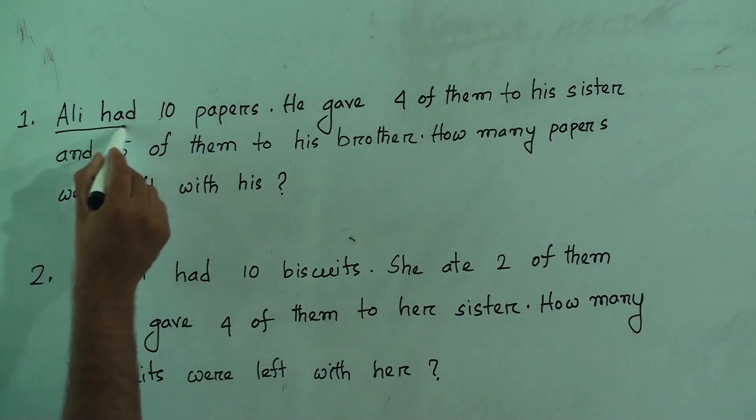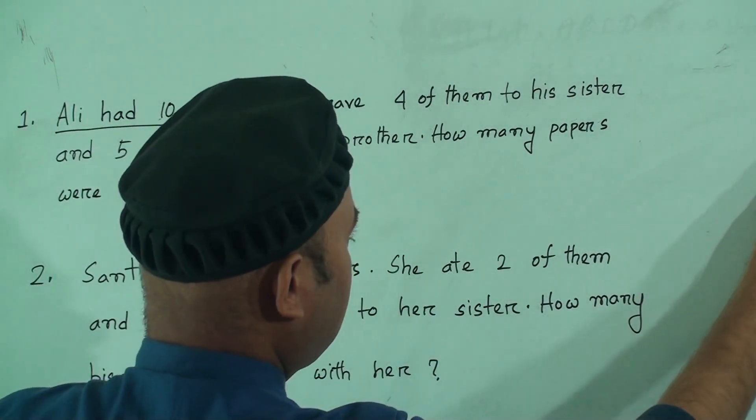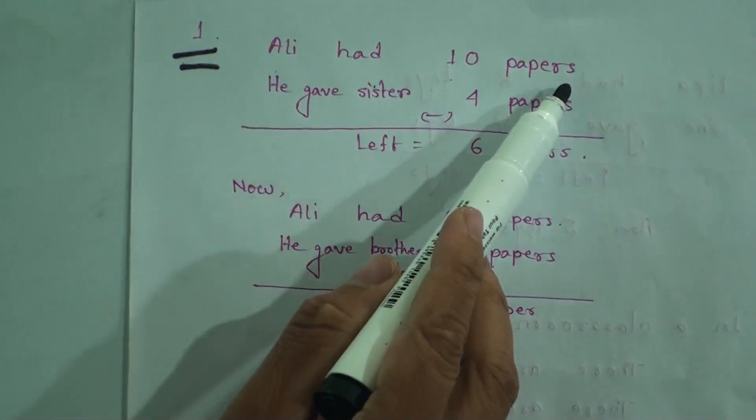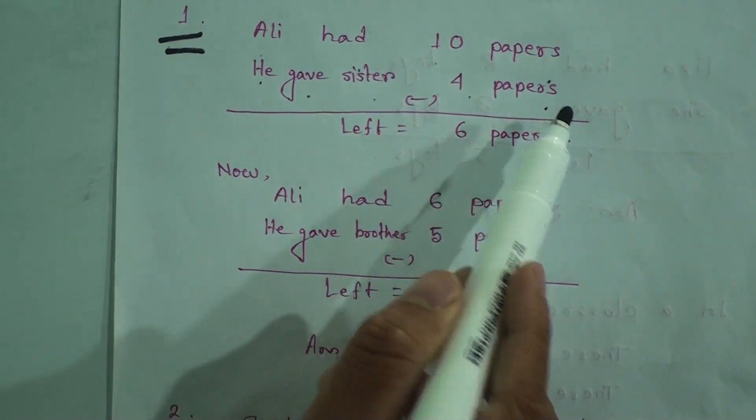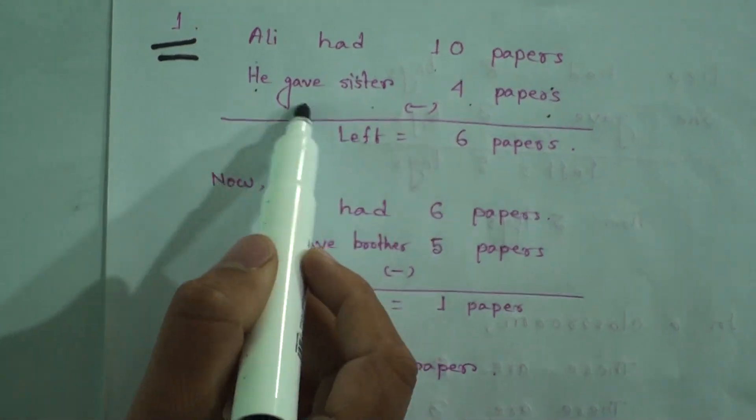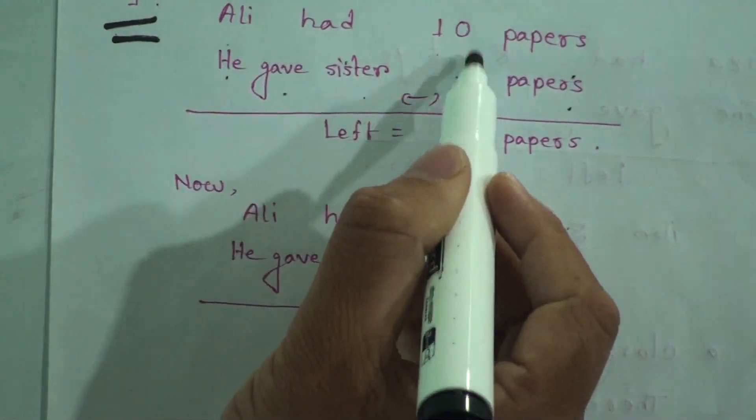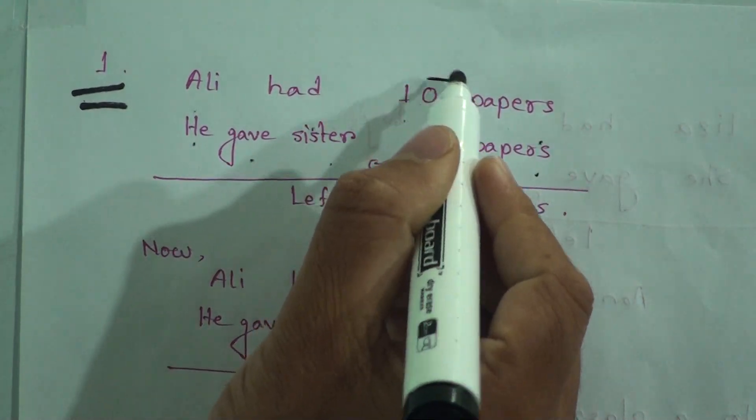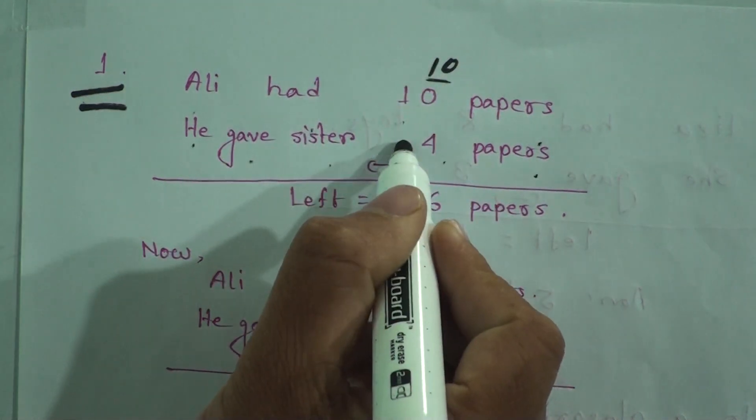First of all, Ali had 10 papers. He gave his sister 4 papers. According to the question, we can write: he gave his sister 4 papers. Now subtract 4 from 10, it will be 6. So left is 6 papers.